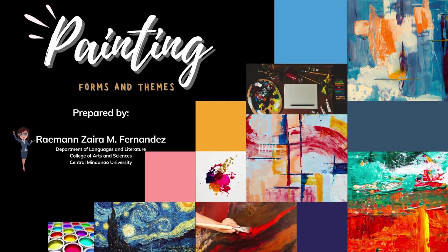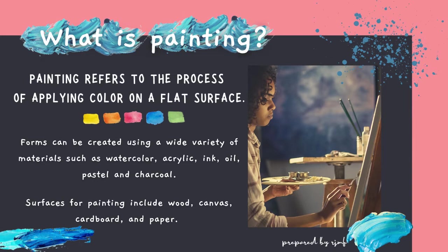What is painting? Painting refers to the process of applying color on a flat surface. Forms can be created using a wide variety of materials such as watercolor, acrylic, ink, oil, pastel, and charcoal. Surfaces for painting include wood, canvas, cardboard, and paper.